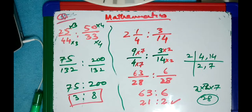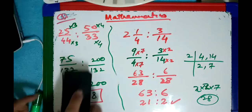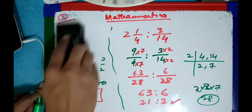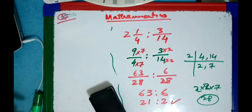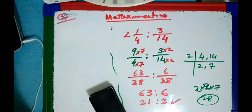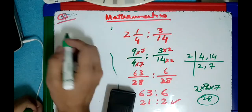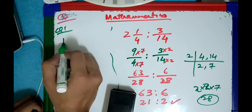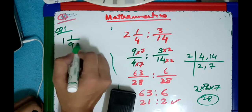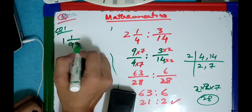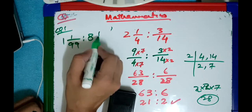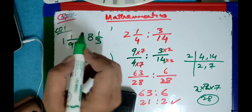Now your turn. I will give you a question now. Your question is 1 whole 1 over 99, ratio 8 whole 1 over 3. Okay, do it.